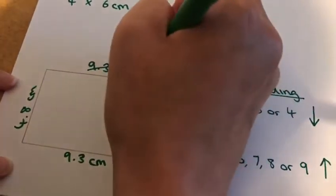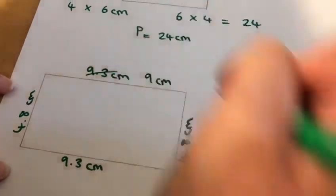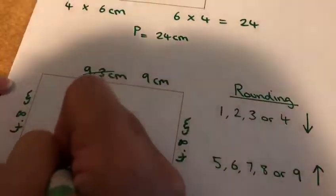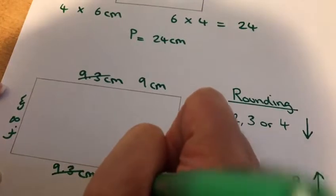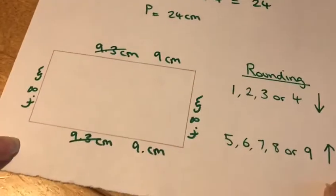In this case, before 9.3 comes 9 centimetres. So actually I'm going to cross out that and put 9 centimetres there, because I've rounded 9.3 down to 9 centimetres.